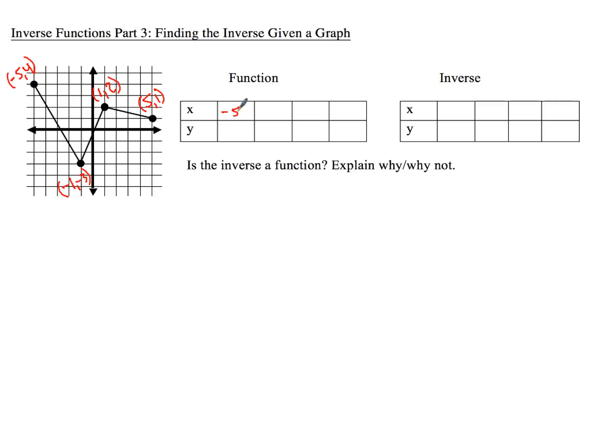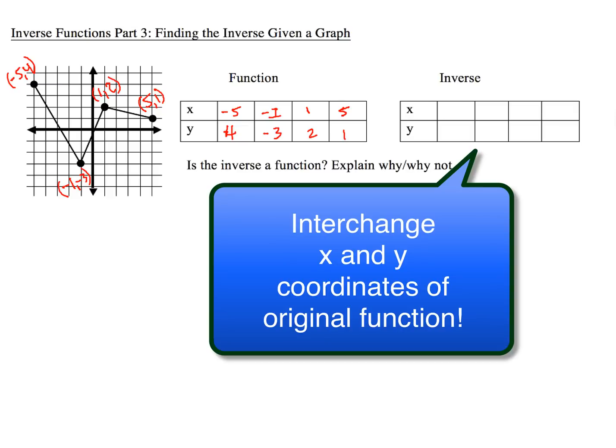So negative 5, 4 will go here. And then I'll have negative 1, and negative 3 goes there. 1, 2. And then lastly, 5, 1. So that's what I have to do to create the table of values for the function. Now the inverse function, you guys already know what to do with that. Just go ahead and switch your x and y. Interchange your x and y coordinates.